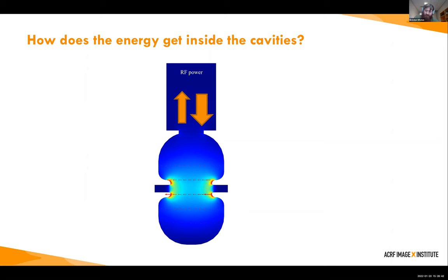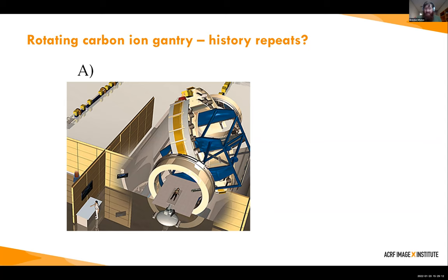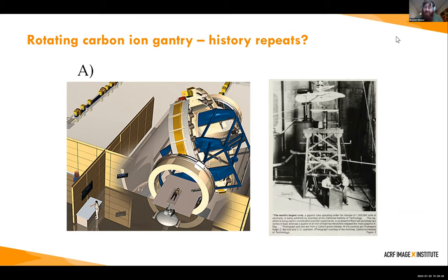This is a rotating carbon ion gantry — an exception to my rule of not talking about other particles. Carbon ions are a very advanced form of radiotherapy with very favorable characteristics, but they're very difficult to produce and control. That structure is absolutely giant, which is obviously problematic in terms of cost, size, and ability to treat many people. I like to show this in the context of our earlier picture from about 60 years ago, because we were in a similar spot with electron acceleration — multi-story structures just to produce a fairly low-energy beam.